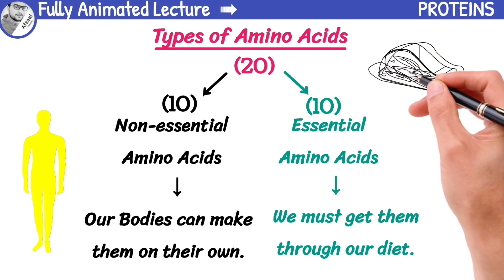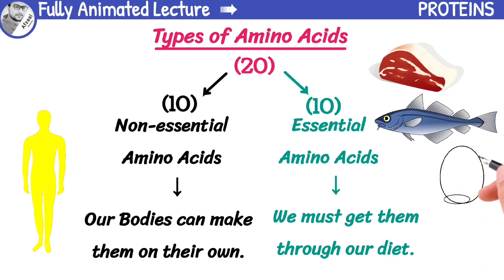Animal-based foods such as meat, fish, eggs, and dairy products are complete sources of protein, which means they contain all the essential amino acids.